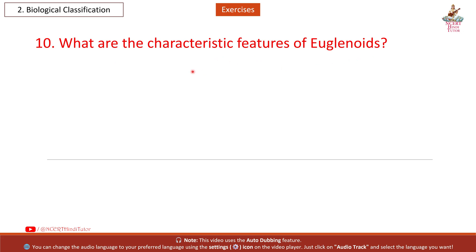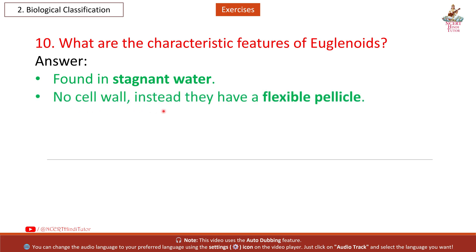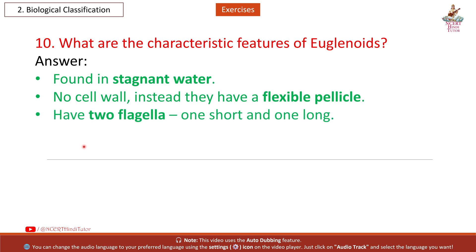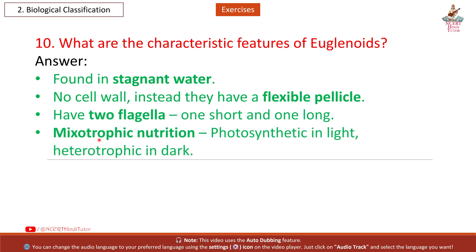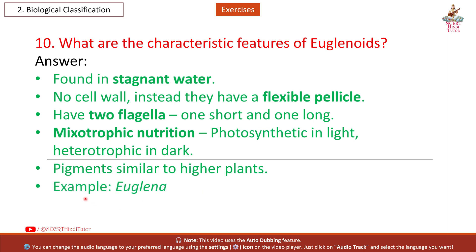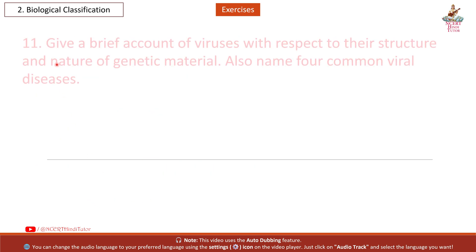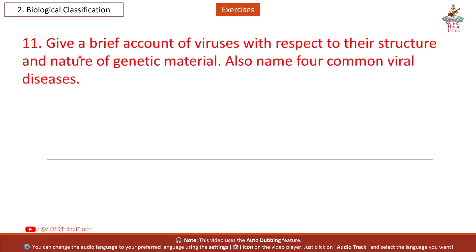Question 10: What are the characteristic features of euglenoids? Answer: Found in stagnant water; no cell wall — instead they have a flexible pellicle; have two flagella, one short and one long; mixotrophic nutrition — photosynthetic in light, heterotrophic in dark; pigments similar to higher plants. Example: Euglena.